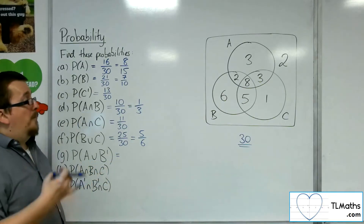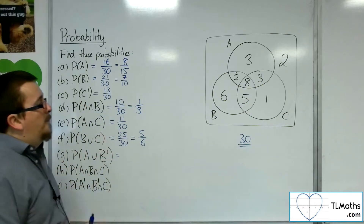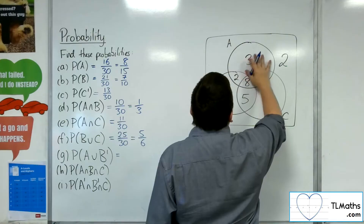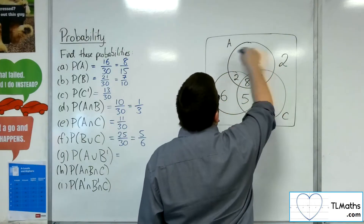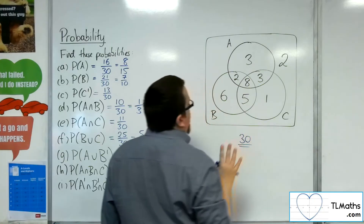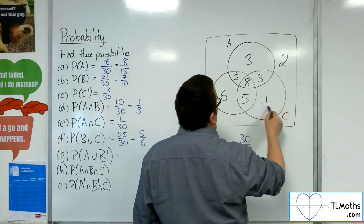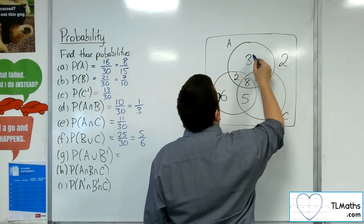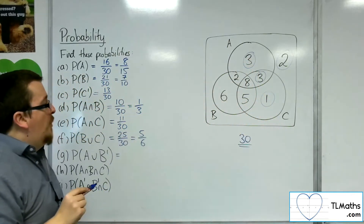Probability of A union not B — A or not B. Anything that is in A and anything that is outside of B. Anything outside of B would include the 1, the 2, the 3.